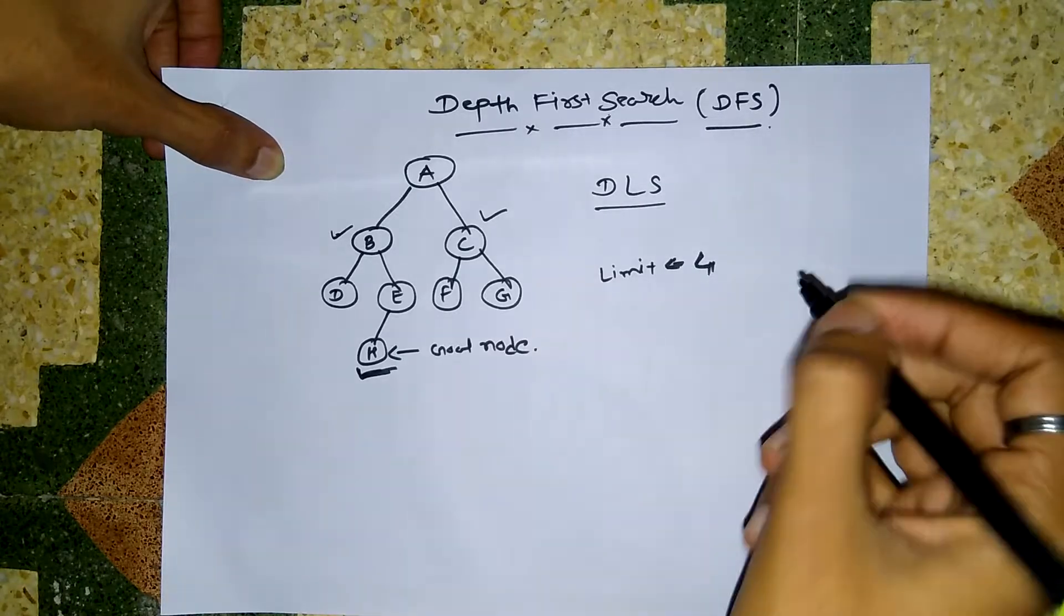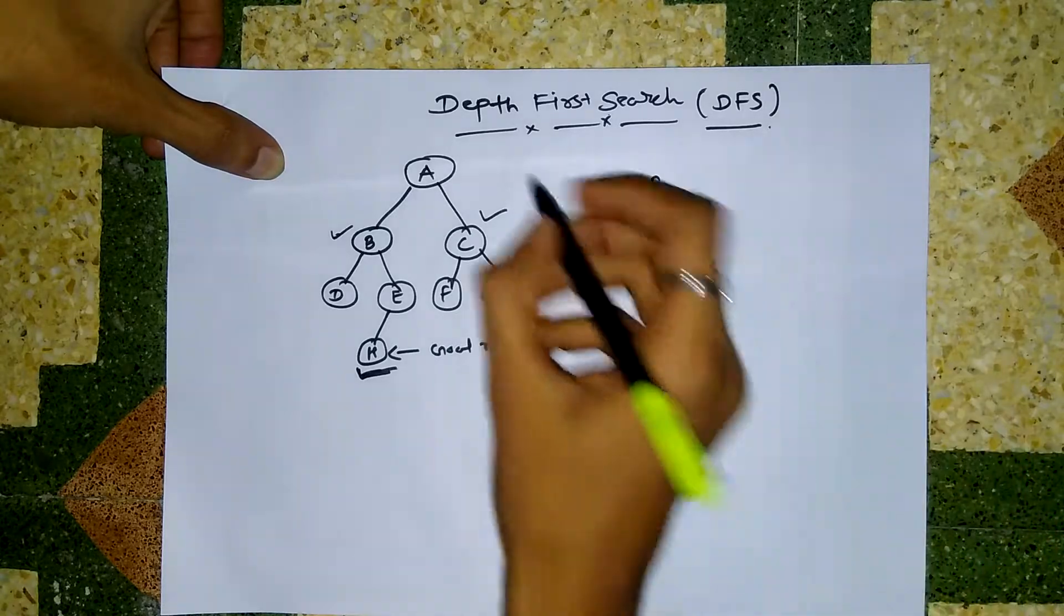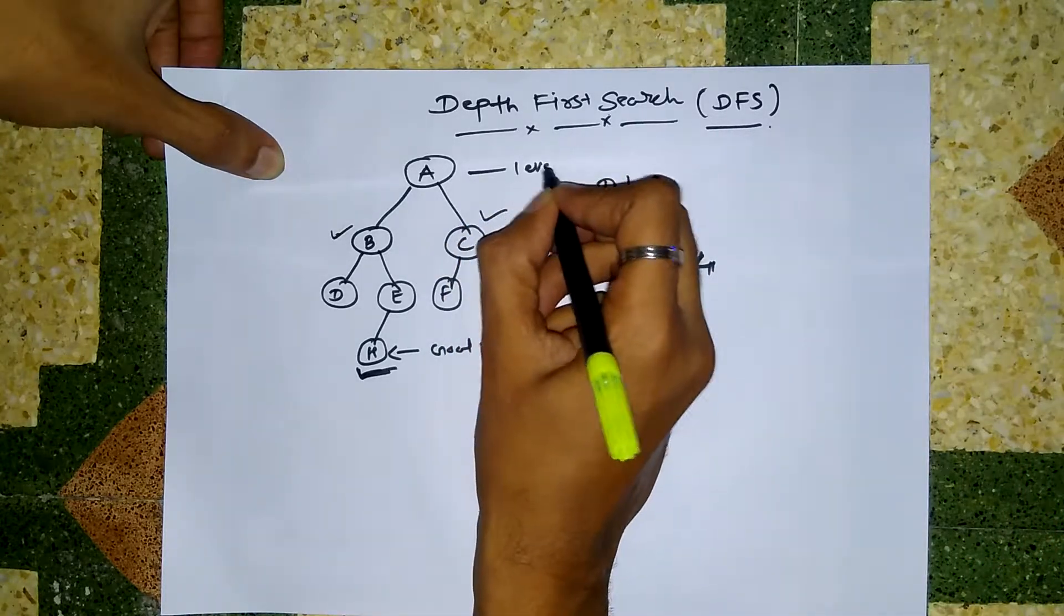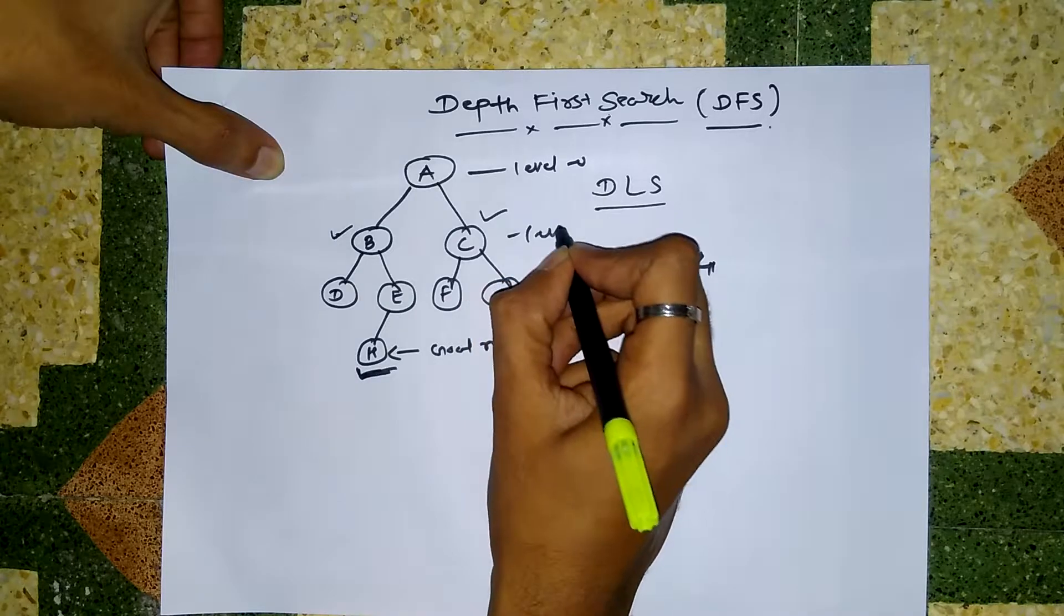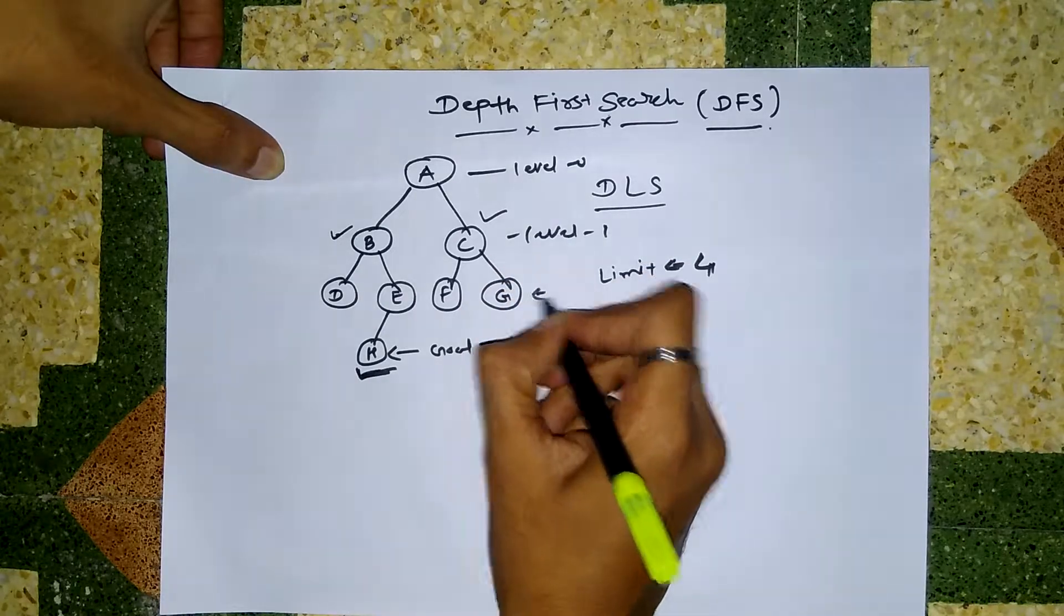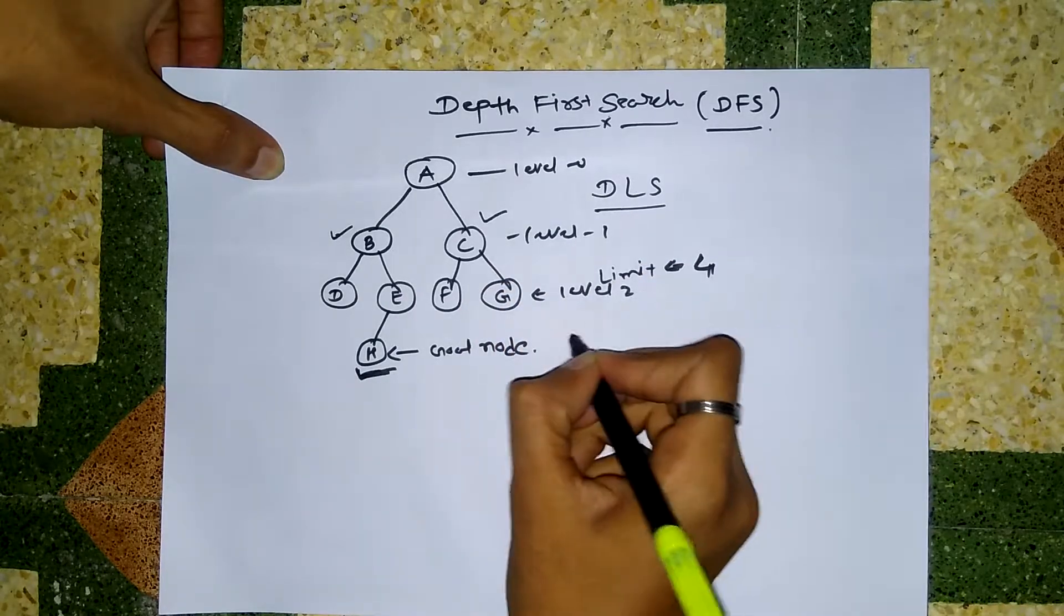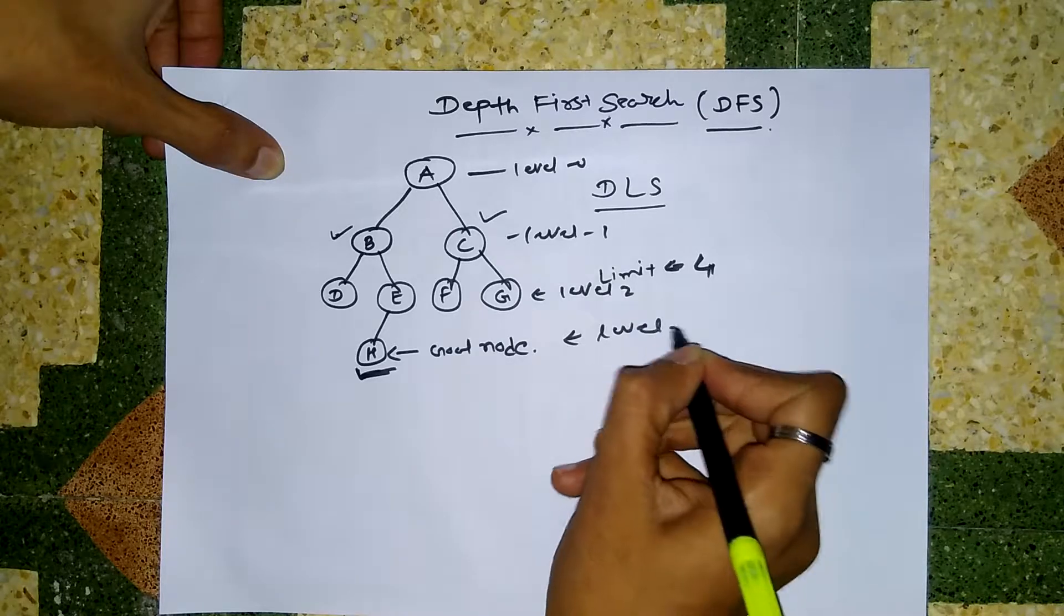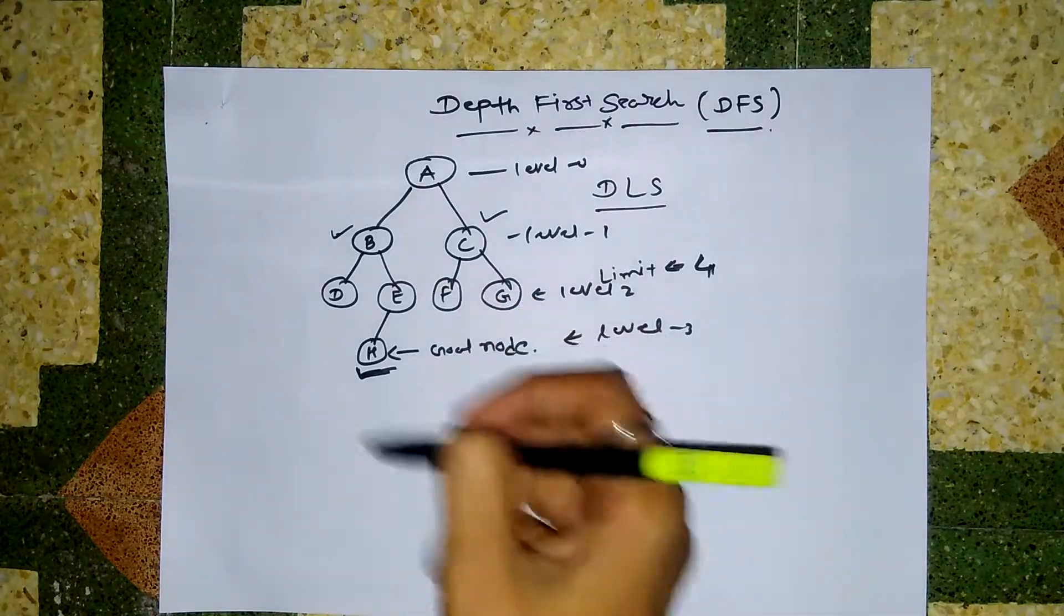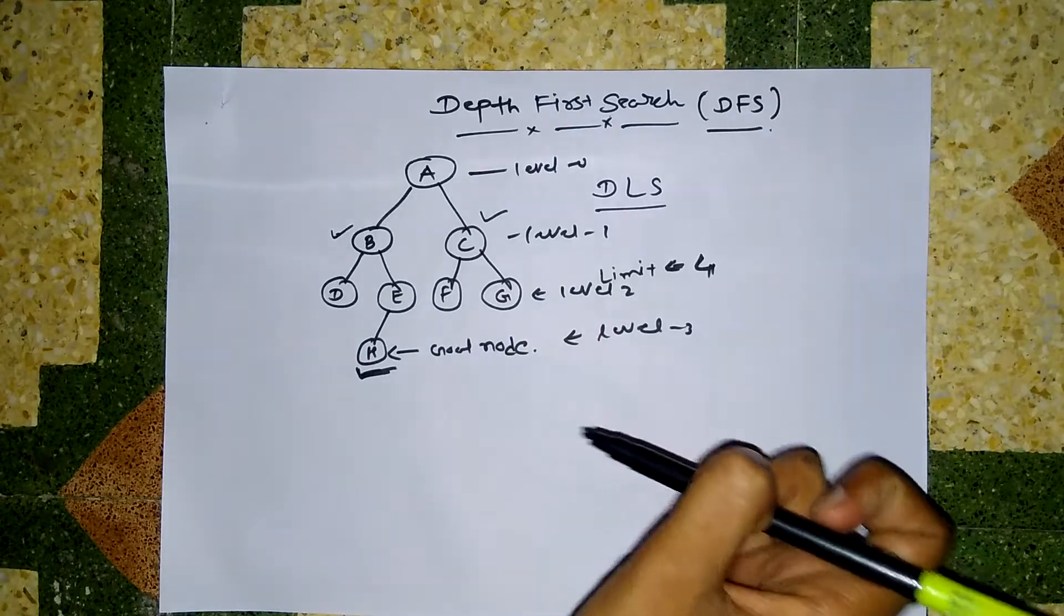These are the levels: this is level 0, this is level 1, this is level 2, and this is level 3. So it will not get trapped into an infinite loop.